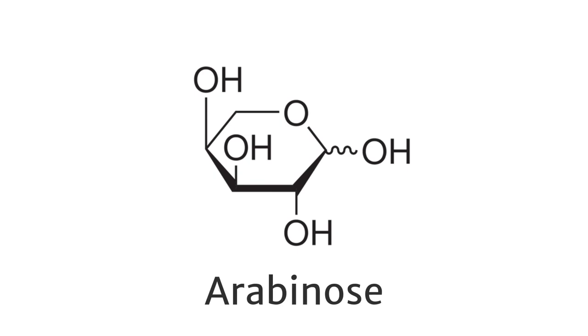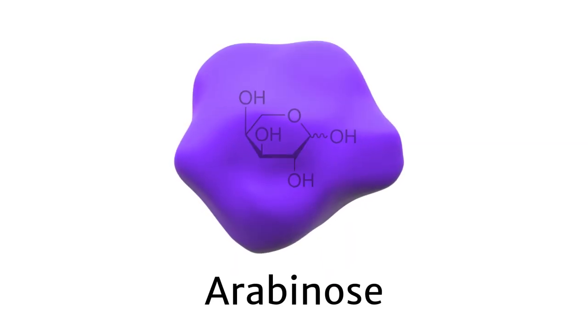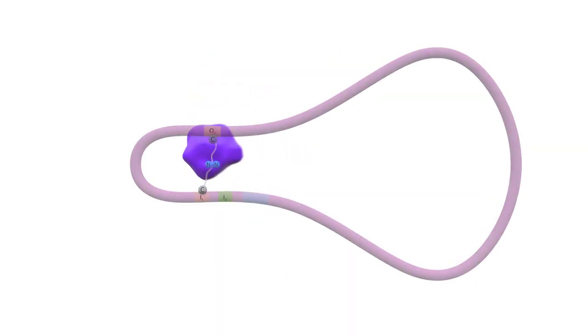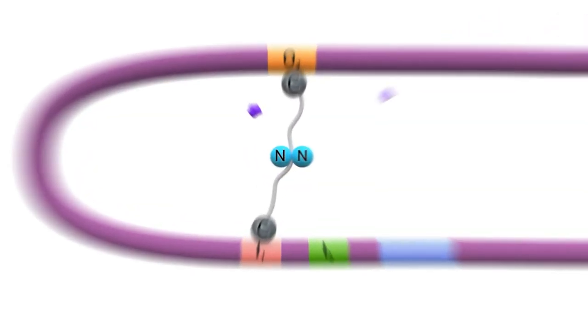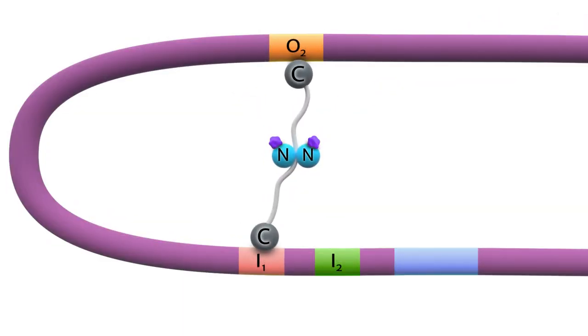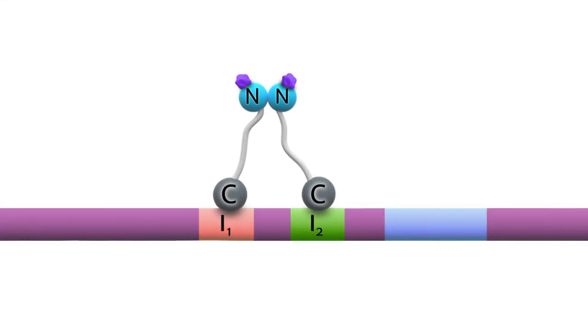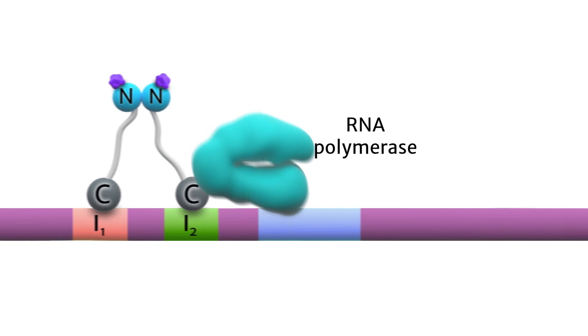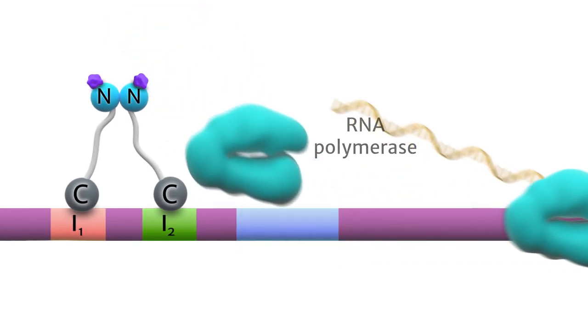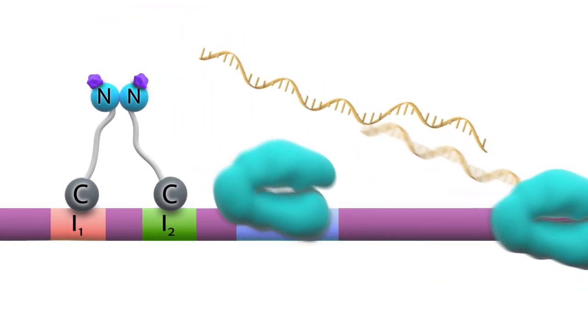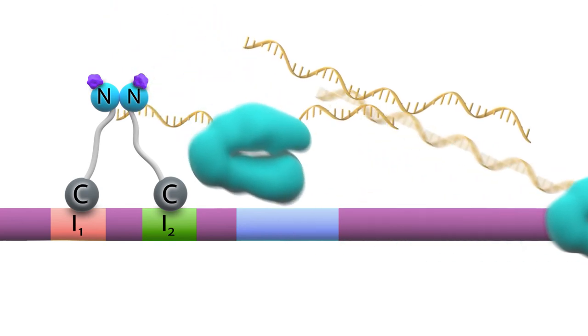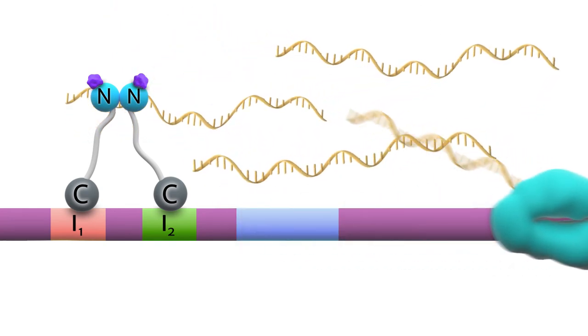Transcription can occur only after arabinose is added to the system. Arabinose serves as the inducer for this system. Binding of arabinose to the N domains of each of the AraC proteins causes the dimer to release from the O2 element and bind I2. This allows RNA polymerase to bind to the promoter and protein expression to proceed. The ara promoter is often used because it is more tightly controlled than the lac promoter.